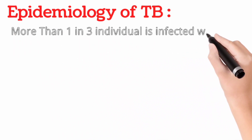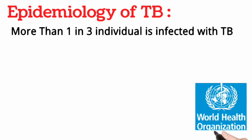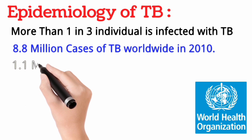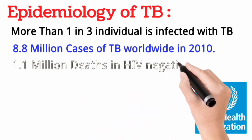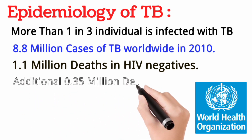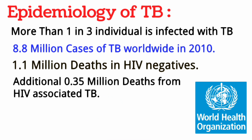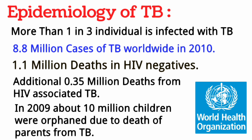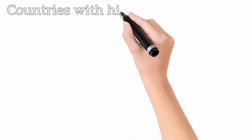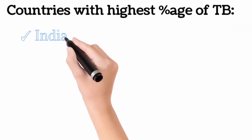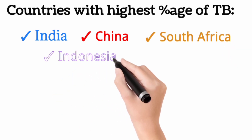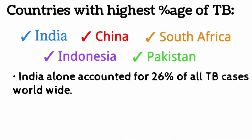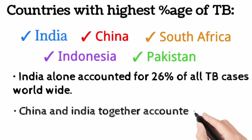According to the World Health Organization, there were 8.8 million incident cases of TB worldwide in 2010, with 1.1 million deaths from TB among HIV-negative persons and an additional 0.35 million deaths from HIV-associated TB. In 2009, almost 10 million children were orphaned as a result of parental deaths caused by TB. The five countries with the highest number of incident cases in 2010 were India, China, South Africa, Indonesia, and Pakistan. India alone accounted for an estimated 26 percent of all TB cases worldwide, and China and India together accounted for 38 percent.